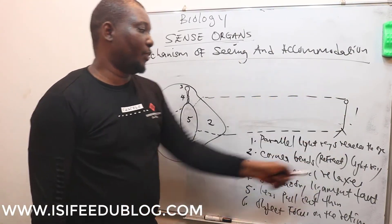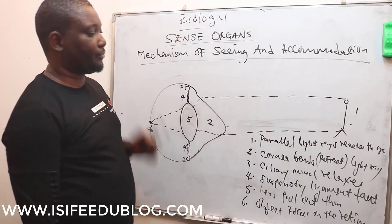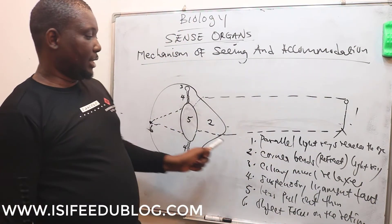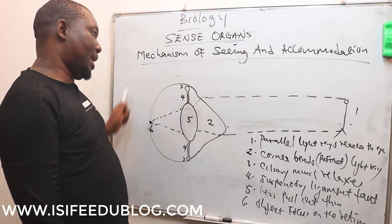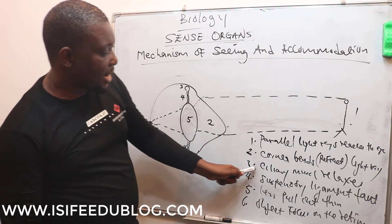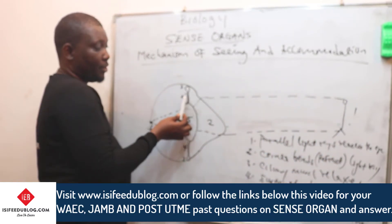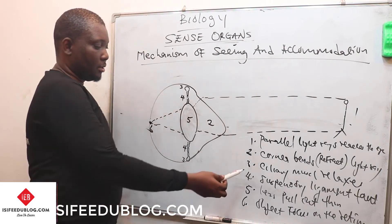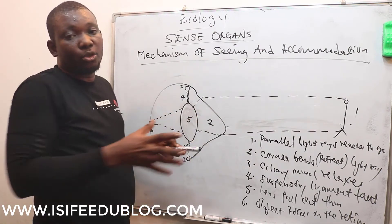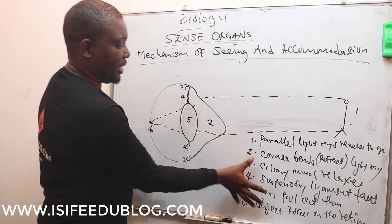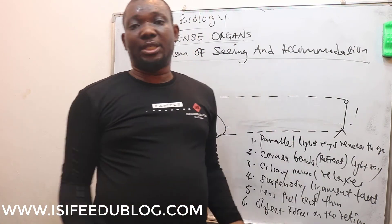So this is how someone sees an object from afar — this is accommodation. To summarize the mechanism: first, parallel light reaches the eye. Two, the cornea bends the light rays. Three, the ciliary muscle relaxes because light is coming from far away, giving the muscles time to relax. Four, the suspensory ligaments are taut, causing the lens to be pulled thin. This process means the object must fall on the retina — everything being equal.